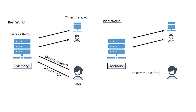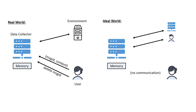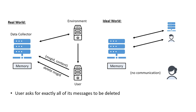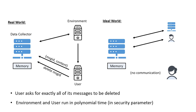What we are going to do is model these various users in various ways. We replace all the other users and services in the system with a single adversarial machine called the environment, which is a Turing machine that communicates with the data collector. We also replace the user with a Turing machine, and to make our definition broader, we allow communication between the environment and the user. We place two restrictions on these machines: first, the user asks for exactly all of its messages to be deleted by the end of the execution.